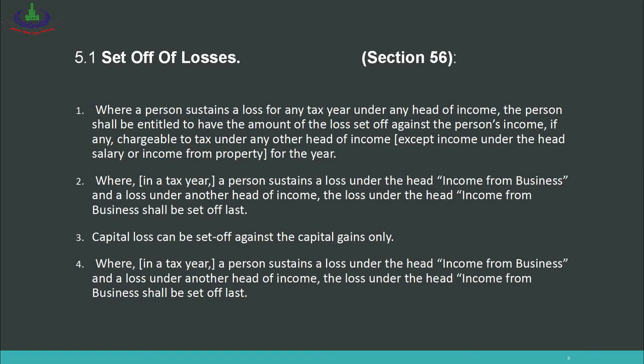Number 2: Where in a tax year a person sustains a loss under the head income from business, and also a loss under another head of income, the loss under the head income from business shall be set off last. This general rule means that if you have a loss from business as well as from another head such as income from other sources or capital gains, then the business loss must be set off last.